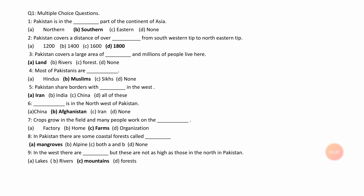Number 9. In the west, there are ___, but these are not as high as those in the north in Pakistan. A. Lakes, B. Rivers, C. Mountains, D. Forest. Answer is C. Mountains.